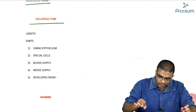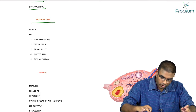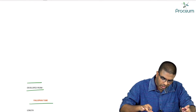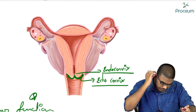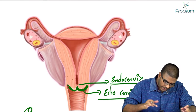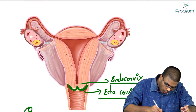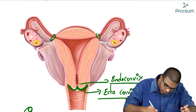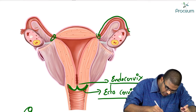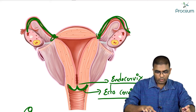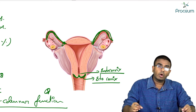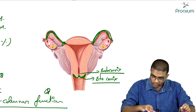Fallopian tubes — what exactly are they? Fallopian tubes are the tubular structures which attach to the uterus at the point of the cornua. These tubular structures, which I am highlighting here, are known as the fallopian tubes. These fallopian tubes attach to the uterine body at the region of the cornua.